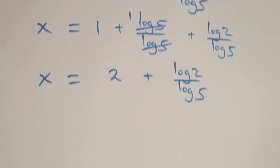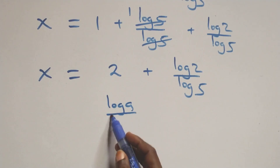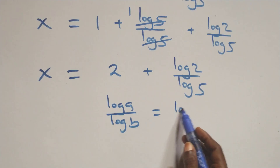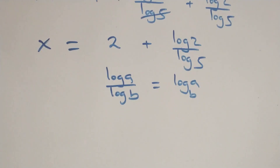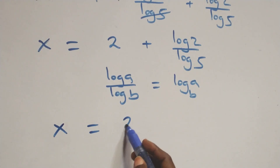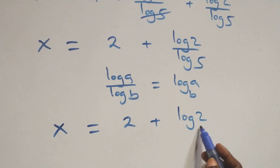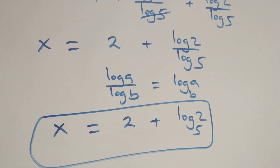Then also here we apply the change of base rule: when we have log a over log b, this is the same thing as log a to base b. At this, all we have becomes x equals to 2 plus log 2 base 5. So the value of x here is x equals to 2 plus log 2 base 5.